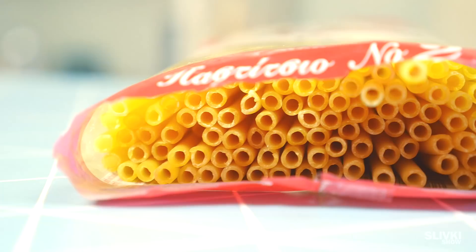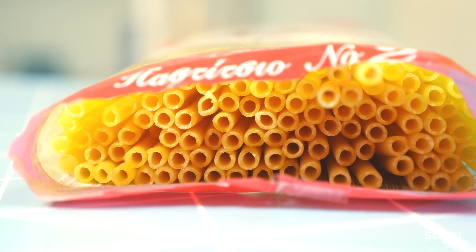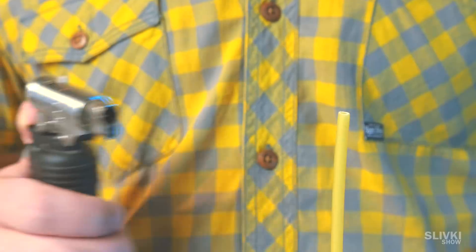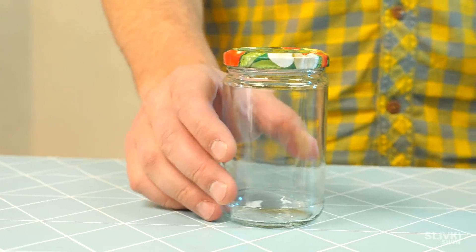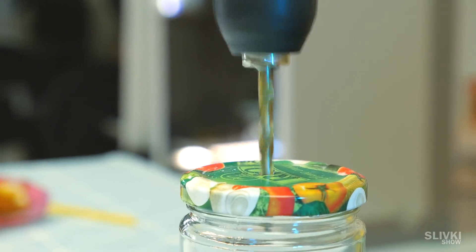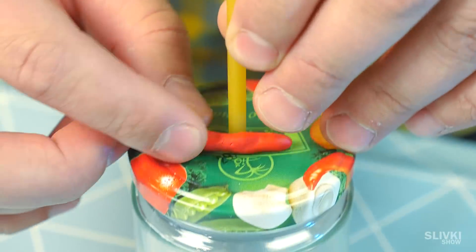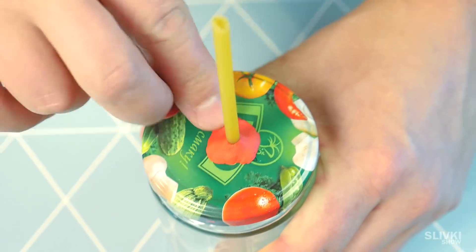These are macaronis, made in the form of a tube. If you ever tried to burn macaroni, you know it's pretty hard to do. We need a small jar with an opening in the lid. Put macaroni inside and fix it with clay.